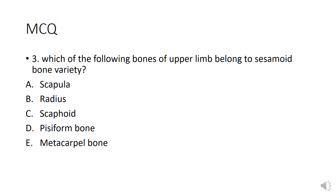The third MCQ is: which of the following bones of the upper limb belongs to the sesamoid bone variety? Although I haven't specifically mentioned the sesamoid bone of the upper limb, from your previous lectures you will be able to answer. Option A is scapula, B is radius, C is scaphoid, D is pisiform bone, and E is metacarpal bone.